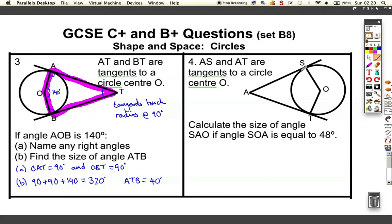Again, AS and AT are tangents. So if they're tangents, we know those two are right angles. Calculate the size of the angle SAO. Let's put a line in from S to A. It's asking us to put a line in the middle there.